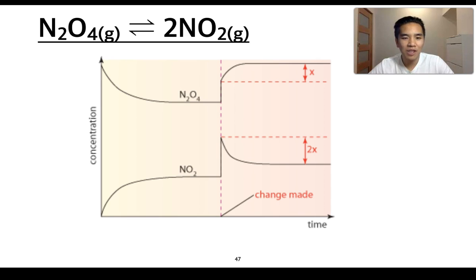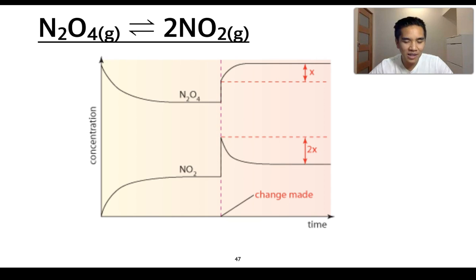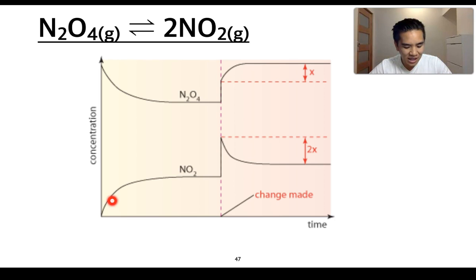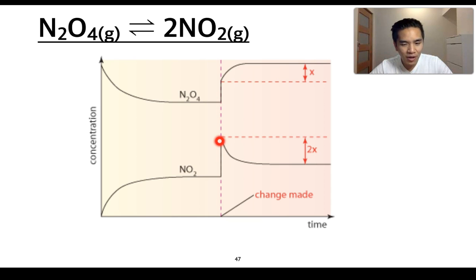This is a graph showing you the system at equilibrium. We can see with this purple line that a change has been induced, and it's up to us to determine what that change is. We can see that initially equilibrium is established, and at this point the concentration of NO2 as well as N2O4 have both increased.